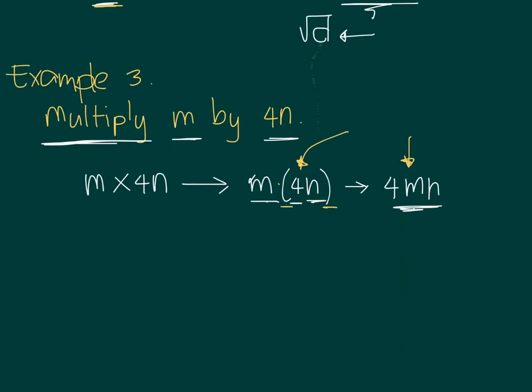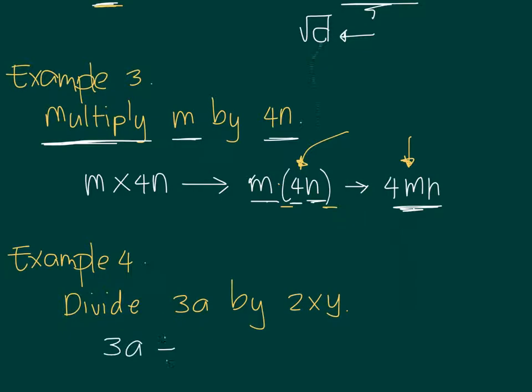One more example. Example 4: Let's say I want to divide 3A by 2XY. So translating this, it means 3A initially is 3A divided by 2XY. But in algebra, we write division using the bar symbol. So it's 3A over 2XY. We use the word over, and then 2XY. That's the meaning of division. That's how we write it. So we no longer write it this way, but it has to be written this way.